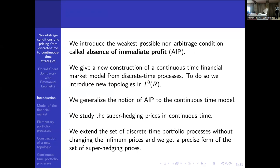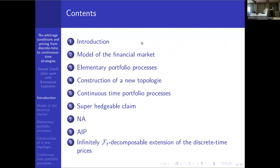To go to continuous time, we introduce a new topology in L0. Then we will generalize this notion of absence of immediate profit to the continuous time model. Then we will study the super hedging prices — the optimum prices in continuous time — and finally we will extend the set of discrete time portfolios without changing the optimum price, obtaining a better form of the set of super hedging prices.